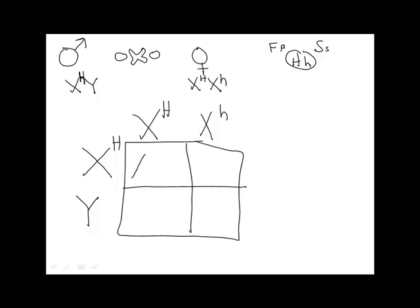In this square, we would get X big H, X big H. What's the gender? Female. How are the farts? Not stinky. Okay. And here we have X big H, X little h. Gender? Female. Stinky? No. In this box, we have X big H and Y. Gender? Male. Stinky? No.